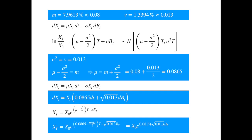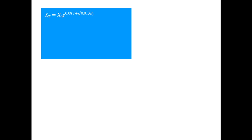Now that we have the parameters of the stochastic process, we can simulate its paths and probability density. The solution gives the value of the process at time t given the value at time 0. We can generalize this to an arbitrary start time t and end time t plus delta t, and then recursively generate the path. As in the arithmetic Brownian motion, we replace the change in Brownian motion by the square root of delta t times the standard normal, since the change in Brownian over delta t is normally distributed with mean 0 and variance delta t.